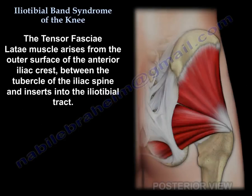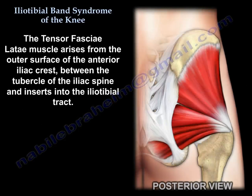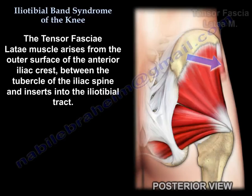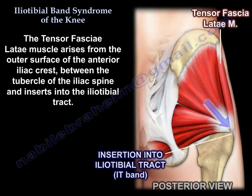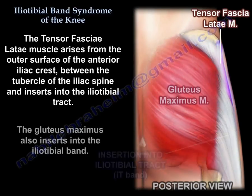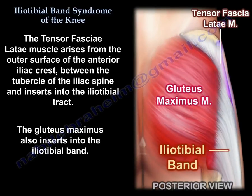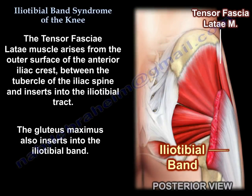The tensor fasciae latae muscle arises from the outer surface of the anterior iliac crest, between the tubercle of the iliac spine, and inserts into the Ileotibial tract. The gluteus maximus also inserts into the Ileotibial band.